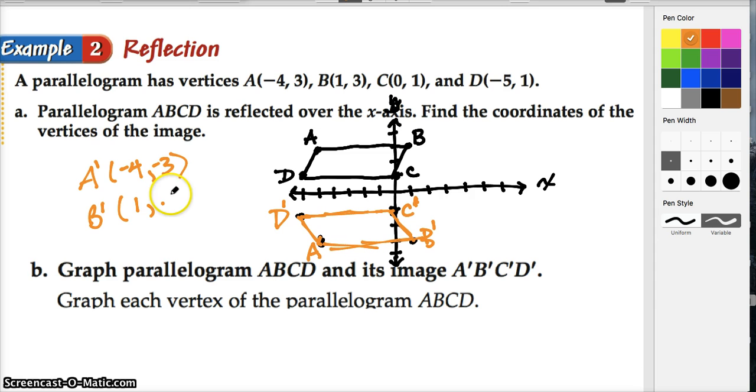B prime has coordinate values of (1, -3). Stay with me, trust me, I got you. And then C prime, we talked about, is (0, -1). And D prime is, let's see, where was D prime? (-5, -1). So even without drawing the picture, if we thought through it, we could definitely have gotten those answers, gotten those other vertices.